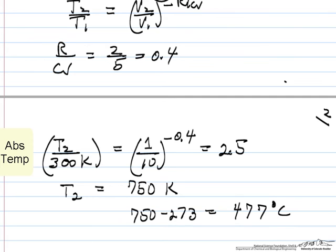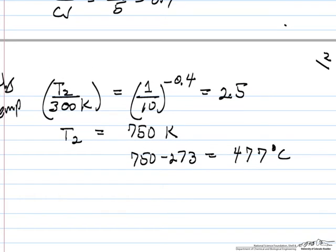Or if we do this in centigrade, it's 477 C. So this simple demo, if we're doing it adiabatically, which means if we do it fast enough, it says we can get 477 C.